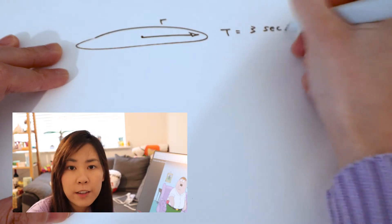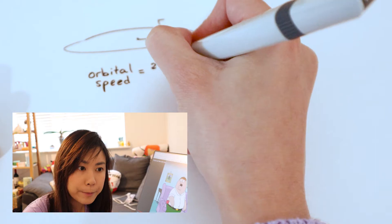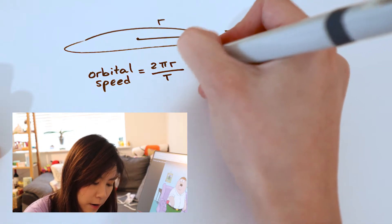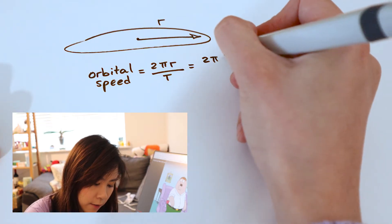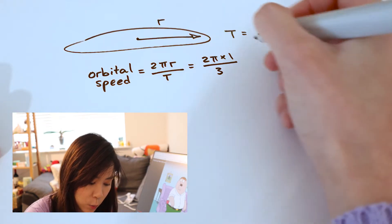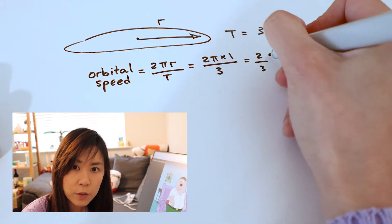The orbital radius is one meter and we have a time period of three seconds. With the assumption that this is a perfect circular orbit, we can work out the orbital speed by doing the circumference of the circle and dividing that by the time period. So that becomes 2πr divided by 3, which is 2π times 1, giving us 2/3 π as the orbital speed.